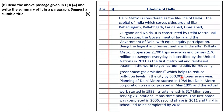Planning of Delhi Metro started in 1984 but Delhi Metro Corporation was incorporated in May 1995 and actual work started in 1998. Its total length is 317 kilometres serving 231 stations. It has three phases: the first phase was completed in 2006, the second in 2011, and the third was scheduled to be completed by 2018.